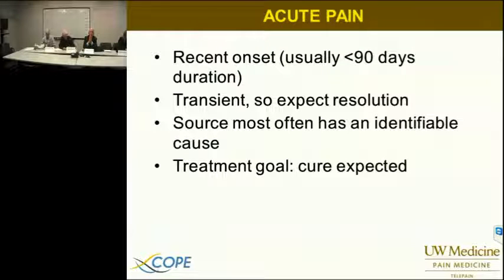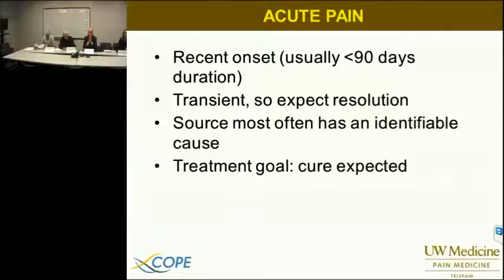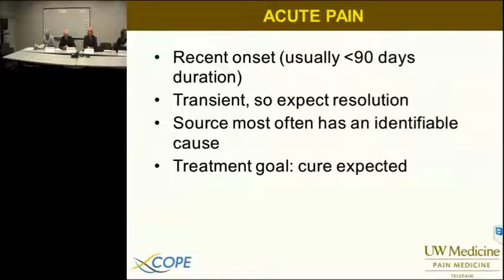By way of general definitions: acute pain means recent onset. Recent means less than 90 days. It is transient — by definition, acute means it comes and goes, which means we expect a resolution. Typically with acute pain we can find an identifiable cause, and our treatment goal is cure, because the body will heal — as attributed to Voltaire: nature heals, physicians get the credit. This certainly applies to acute pain.